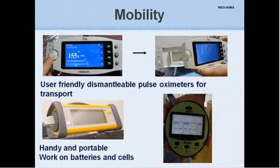The display panel can be dismantled from the unit after charging the battery for ease of transportation in few models. We also have handy portable pulse oximeters that work on batteries and cells, thus making them ideal for transport. Some pulse oximeters have rubber frames which provide sturdiness during transport.